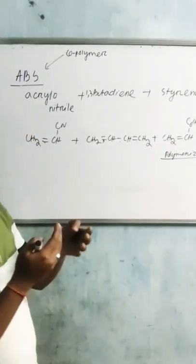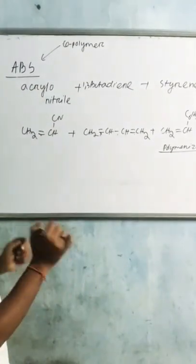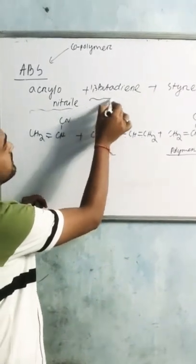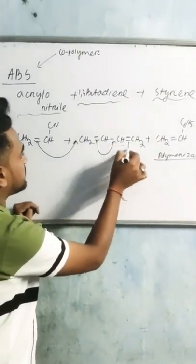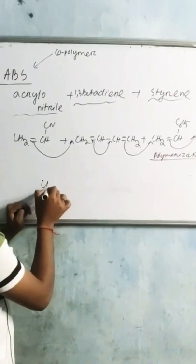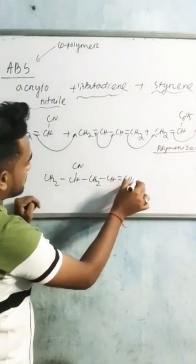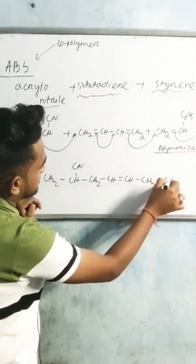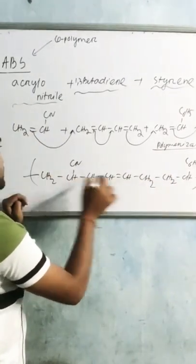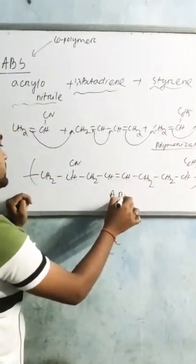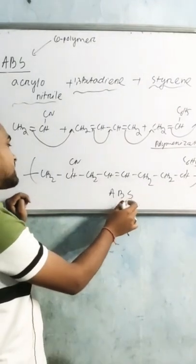Co-polymer may different monomer units hote hain, and in ABS polymer three different monomer units hain: A stands for acrylonitrile, B stands for 1,3-butadiene, and S stands for styrene. The formula, when these bonds are combined, gives ABS: CH2-CH(CN) for acrylonitrile, CH2-CH=CH-CH2 for 1,3-butadiene, and CH2-CH(C6H5) for styrene, repeated n times.